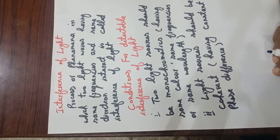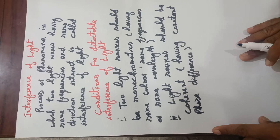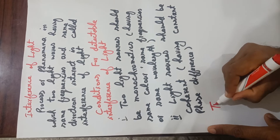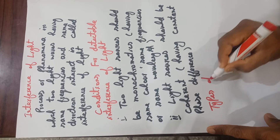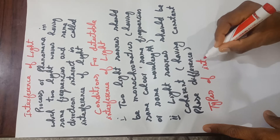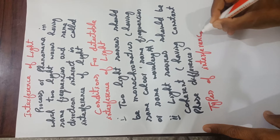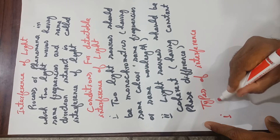Next are the types of interference. There are two types of interference of light. The first one is constructive interference.